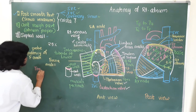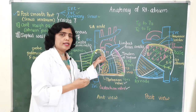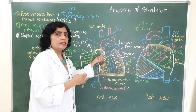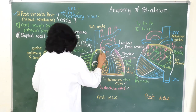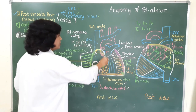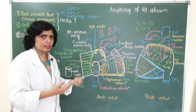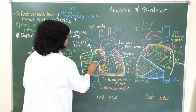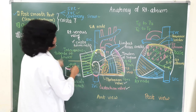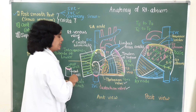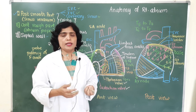In the upper part of this region there is an elevation called the torus aorticus, produced by the ascending aorta — specifically by the posterior right non-coronary sinus of the ascending aorta. To summarize, the interior of the right atrium is divided into three parts: the posterior smooth part (sinus venarum), the anterior rough part (atrium proper/pectinate part), and the septal wall.